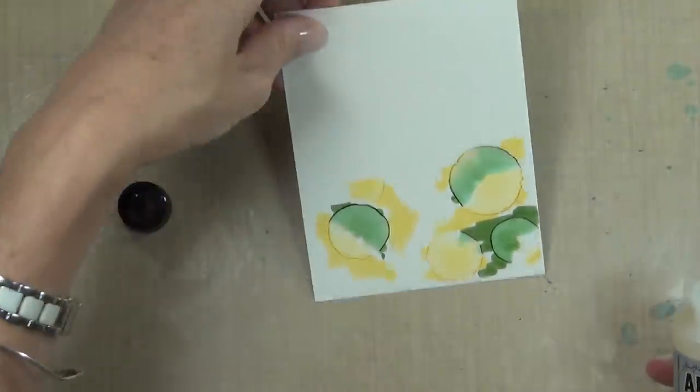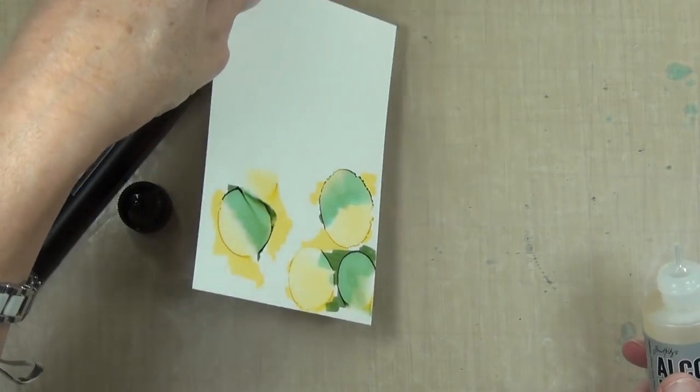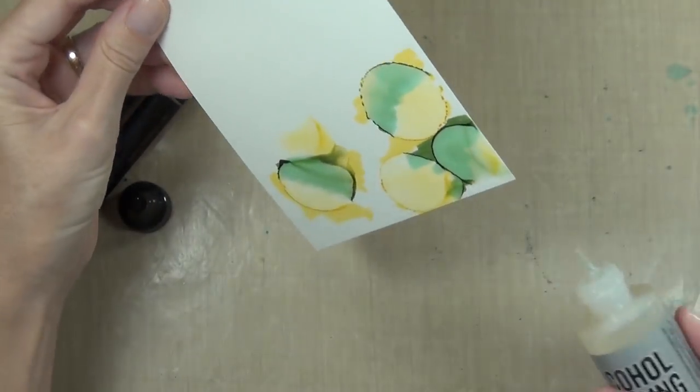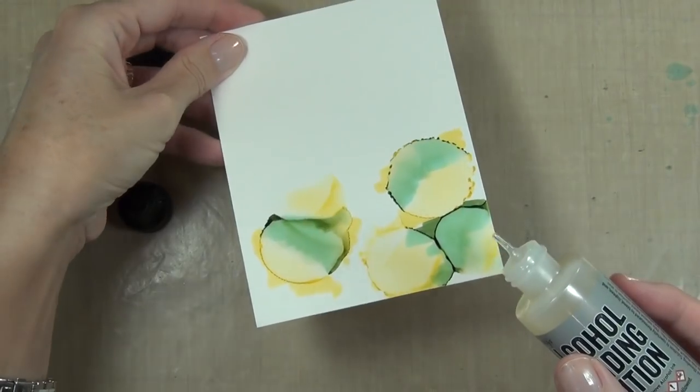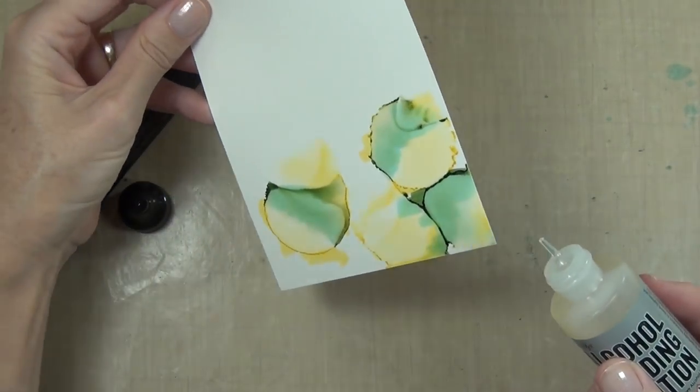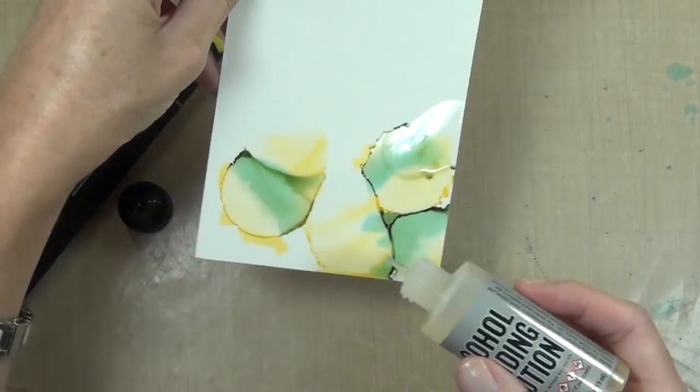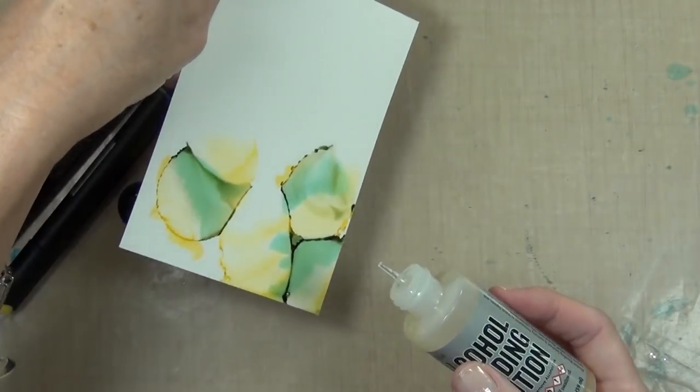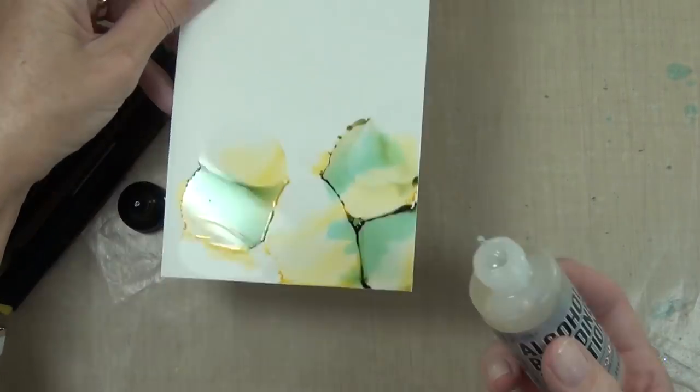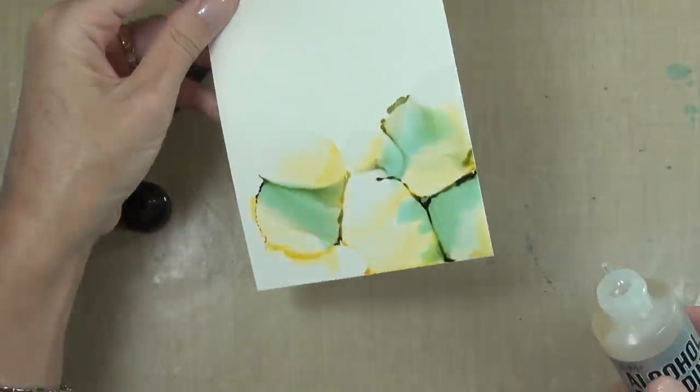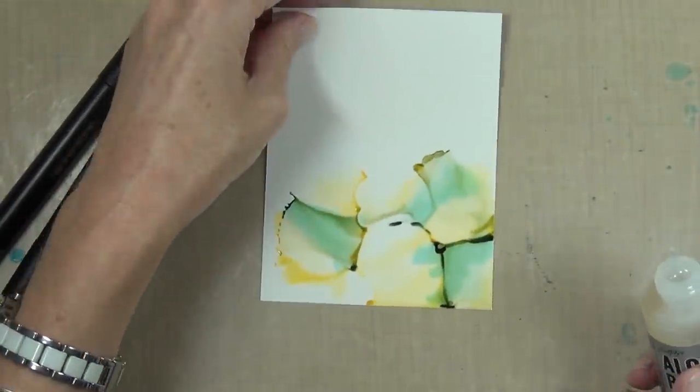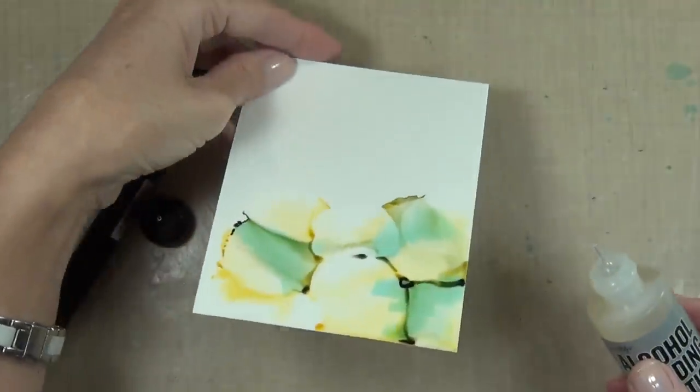I've got some blending solution now. This stuff is awesome. What it does is it moves the color. I didn't want the marks because I don't have re-inkers or any other way to add these colors to my cardstock. I just literally drew them on there and I'm using the blending solution to actually blend these colors.